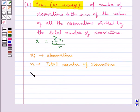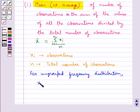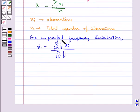Now for ungrouped frequency distribution, x̄ is equal to summation fi xi (i goes from 1 to n) upon summation fi (i goes from 1 to n). Here, xi are the observations and fi are the frequencies.